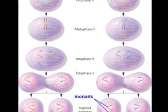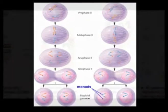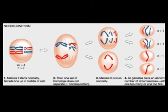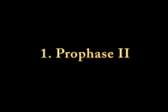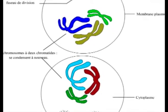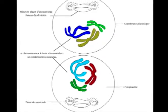Meiosis 2: The second meiotic division is essentially a mitotic division which divides each haploid meiotic cell into two haploid cells. The second meiotic division includes four stages. Prophase 2: The centriole divides into two, forming two pairs of centrioles, each pair migrating to opposite poles. The microtubules get arranged in the form of a spindle at right angles to the spindle of the first meiosis. The nuclear membrane and the nucleolus disappear.